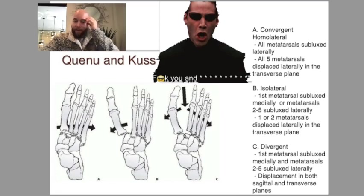In order to remember what Quenu and Kuss is used to classify, I have Keanu here from the Matrix. And there's a scene where he starts cussing out of nowhere, and that's just for a brief few seconds. So Keanu is cussing, and that's how you can remember this classification.